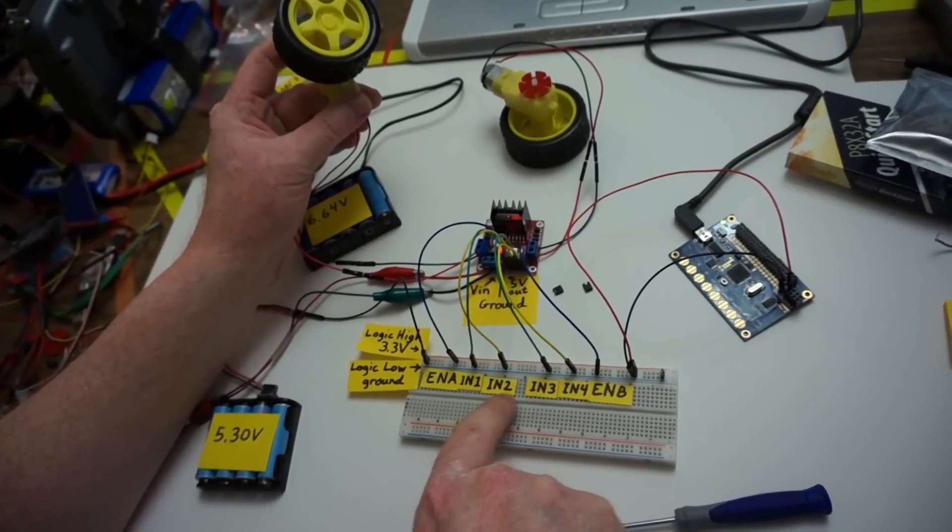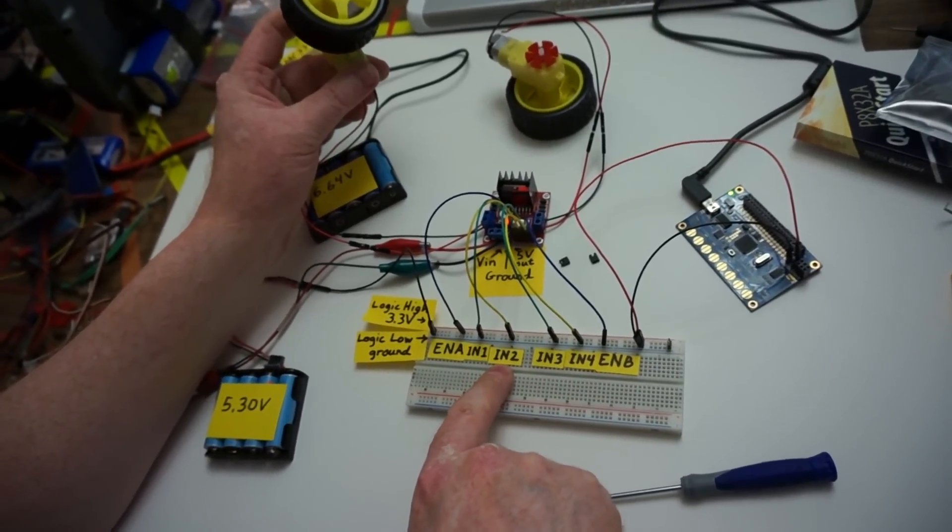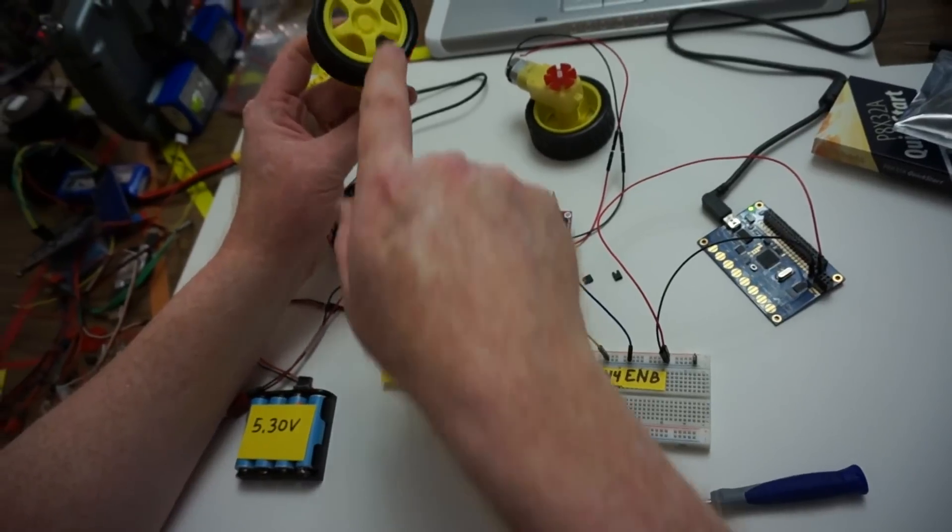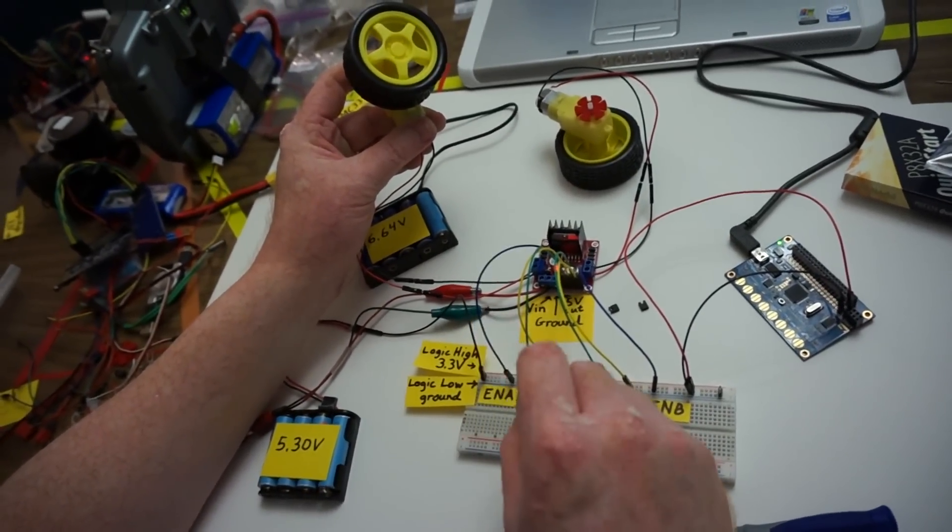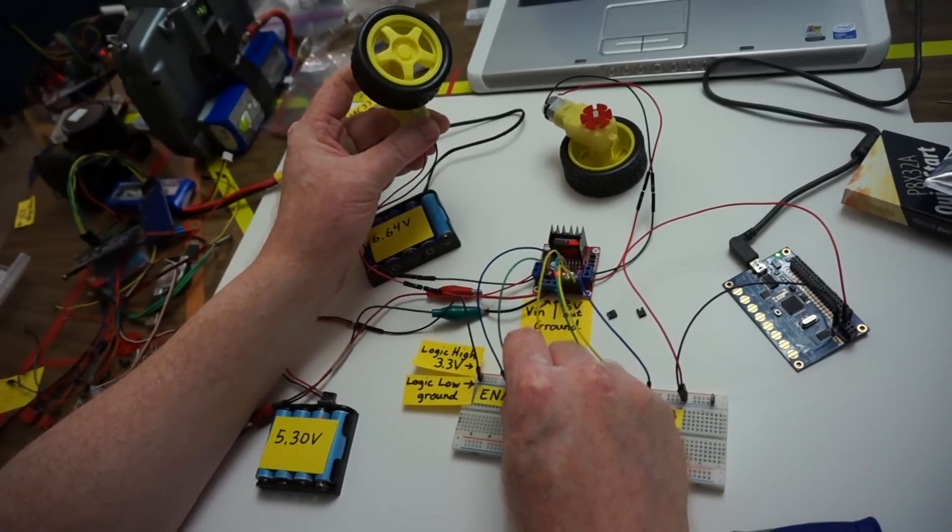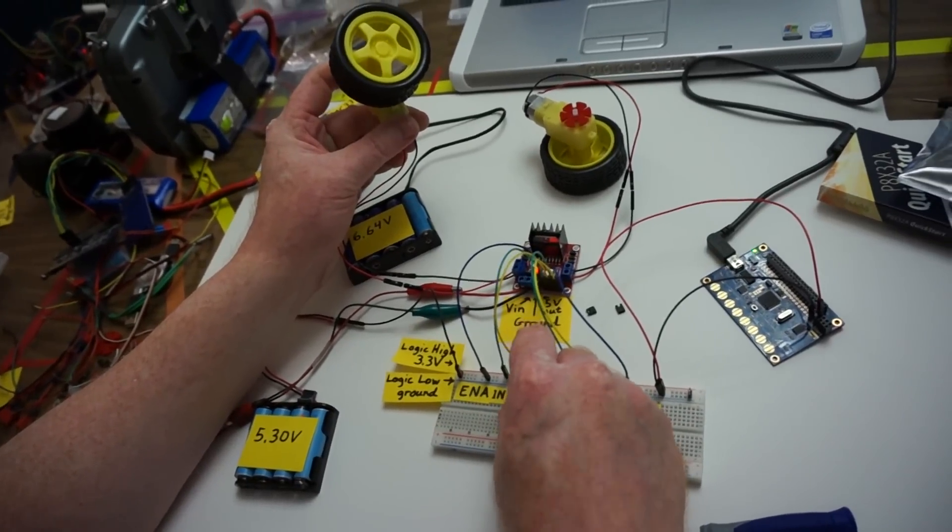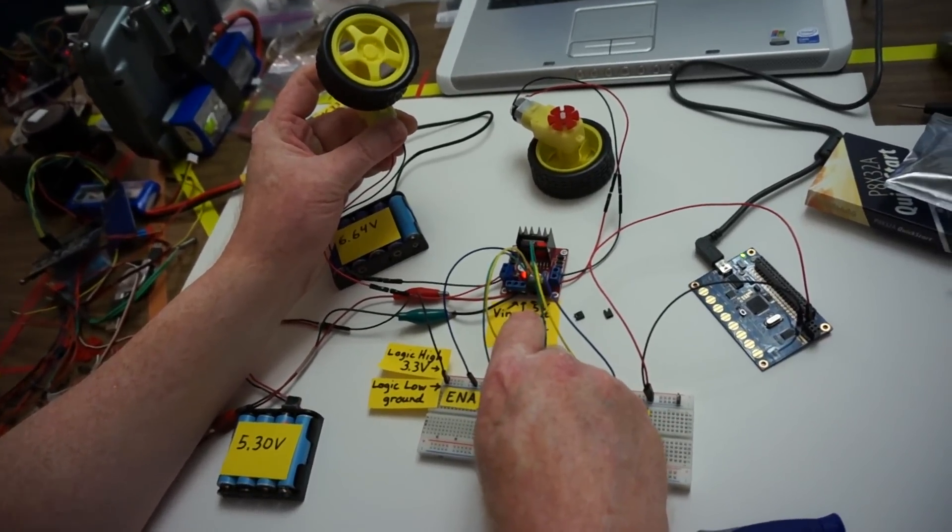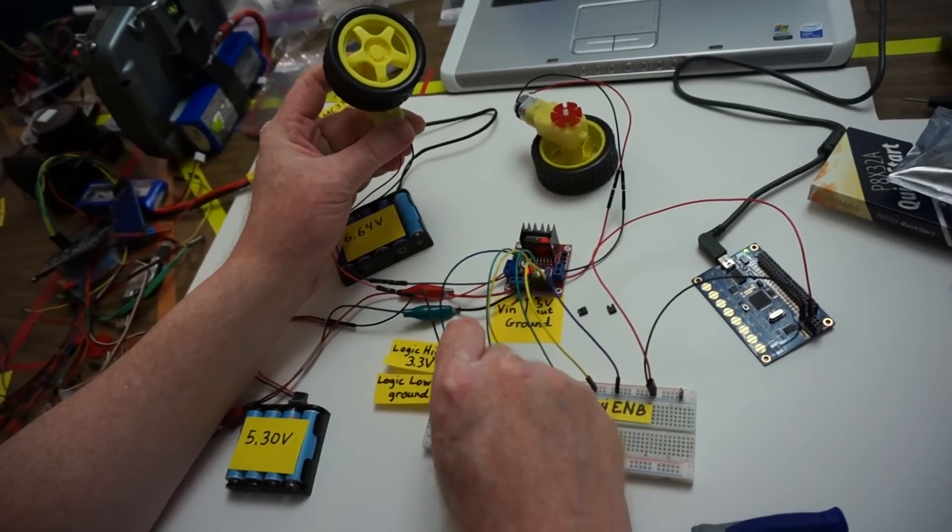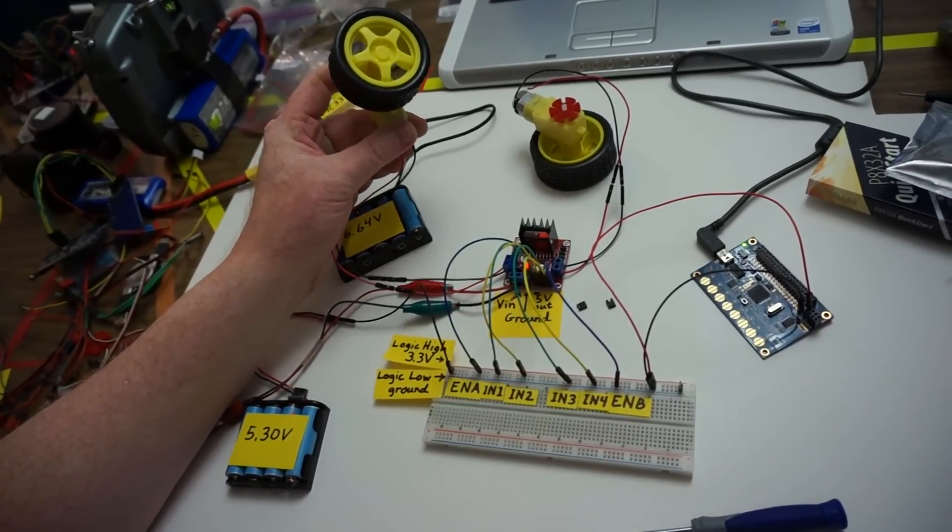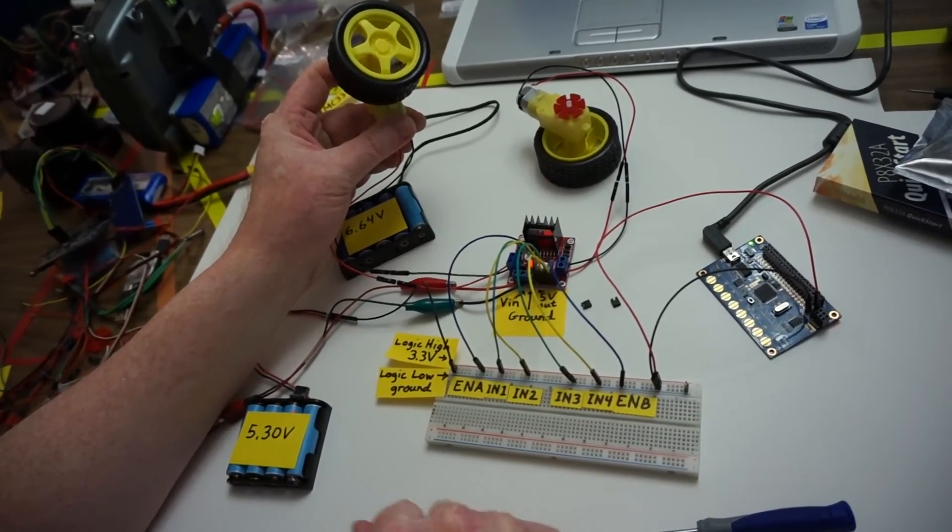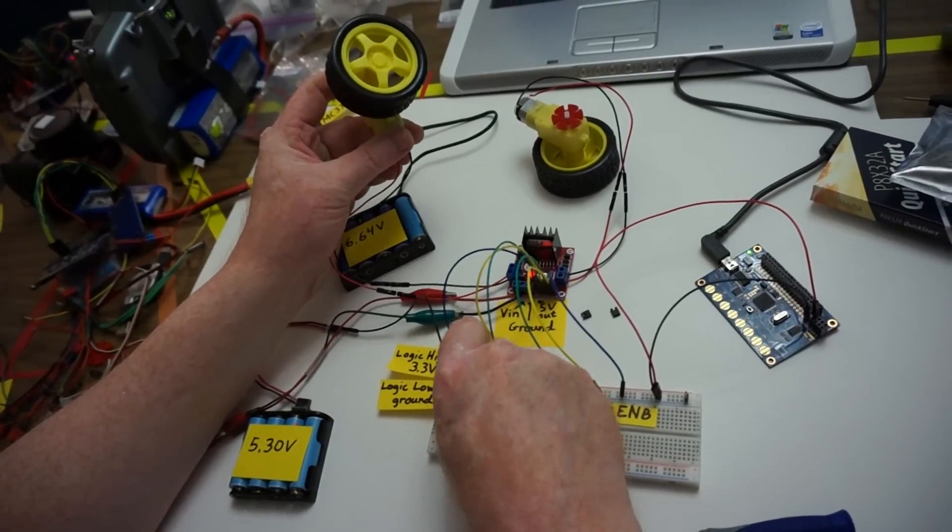So most of the direction pins, whatever we want to call these, those are low so the motor doesn't turn. We'll put the enable back low and if we put both of these high and now we put the enable pin high, it still won't turn because these are both the direction pins are both the same. Pull it low again.